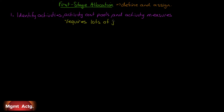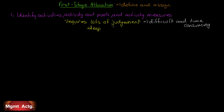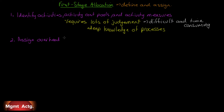Starting an activity-based costing system from scratch and moving into a company and designing an ABC system is difficult and time-consuming. Even for the best seasoned professionals, this can be difficult because it requires a deep level of knowledge about the business processes involved. Somebody can't just walk into a business cold and design an ABC system without a lot of help from management, supervisors, and employees to understand what activities are involved in each process, and to what we assign the costs of those activities as it relates to overhead costs.